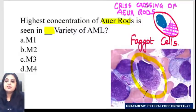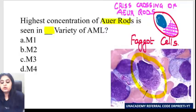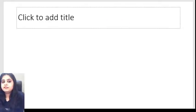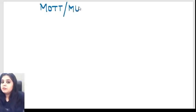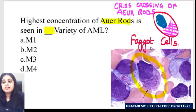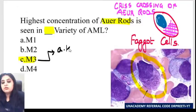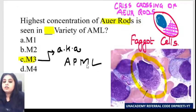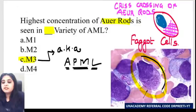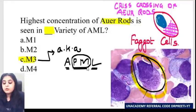Someone says Mott cell — no. A Mott cell is the mulberry cell, seen in multiple myeloma. I'm talking about faggot cells where you see criss-crossing of Auer rods, and that is seen in AML M3. AML M3 is also known as APML — acute promyelocytic leukemia. These cells are all promyelocytes. Acute promyelocytic leukemia shows you faggot cells.